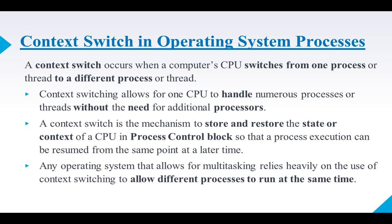Context switching is a mechanism where you store or restore all the data, state, or context of the CPU in one particular process control block, so that the process execution can be resumed from the same point at a later time. For example, suppose you are playing a song of 5 minutes and you have listened to 2.5 minutes — you can stop that song immediately, and whenever you want you can resume that song from the 2.5-minute point again. Similarly, context switching is a mechanism where you can store and restore that data anytime you want.